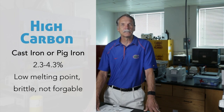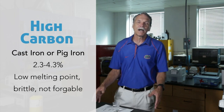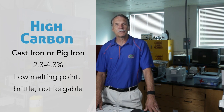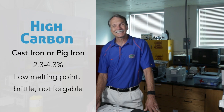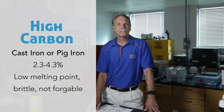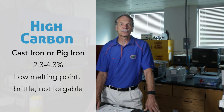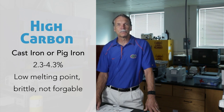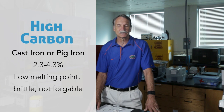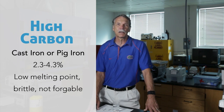Finally, at between 2.3% and 4.3% carbon, you get cast iron or pig iron. This actually has a lower melting point and was meltable in ancient times, but it was not forgeable because the material is very brittle. It has so much carbon that the properties deteriorate, so it can only be cast — thus the name cast iron.